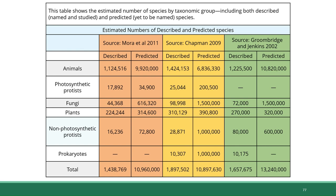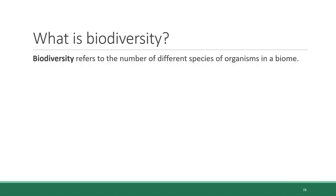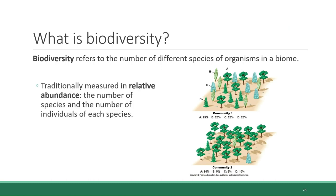This brings us to the question of what is biodiversity and how do we measure it? As we defined earlier in the chapter, biodiversity refers to the number of different species of organisms present in a biome. Traditionally, biodiversity has been measured in terms of relative abundance, which includes the number of species and the number of individuals of each species in an ecosystem. For example, both of these illustrated communities have the same number of species of trees — four different trees in each area. However, in community number two, 80% of the trees are of a single species, whereas in community number one the four species are evenly distributed. So community one has a higher relative abundance of each species and is therefore more biodiverse.